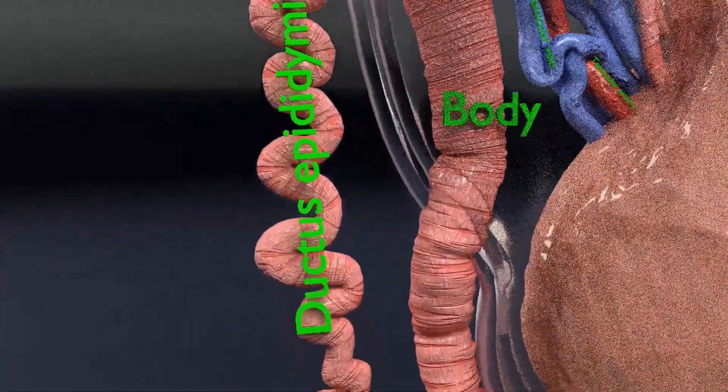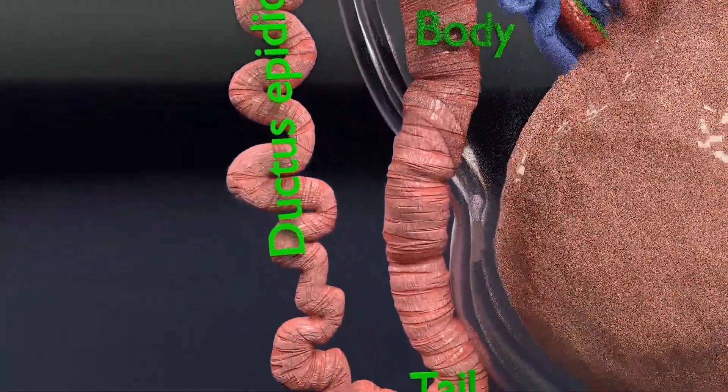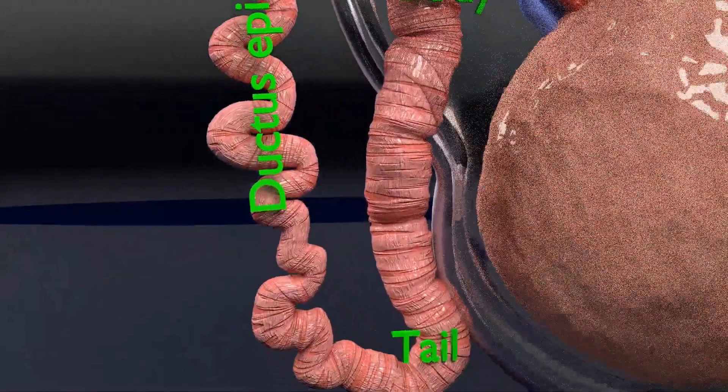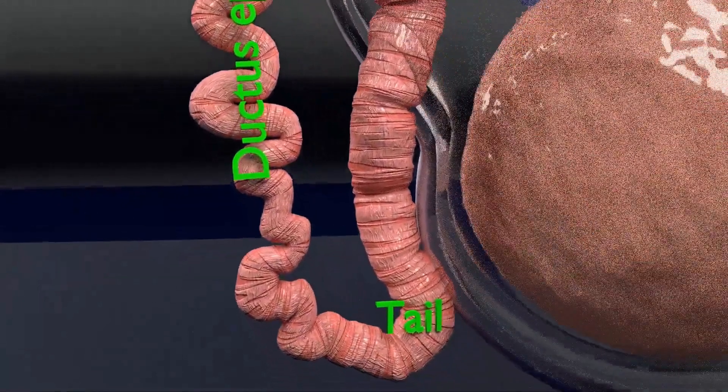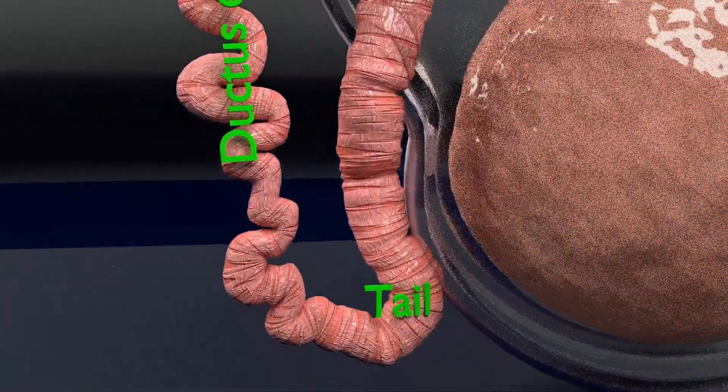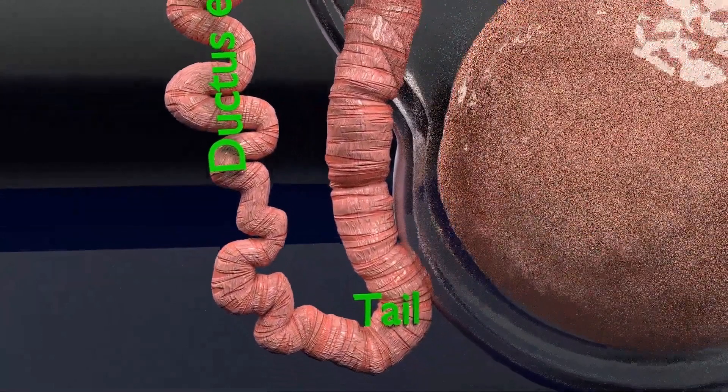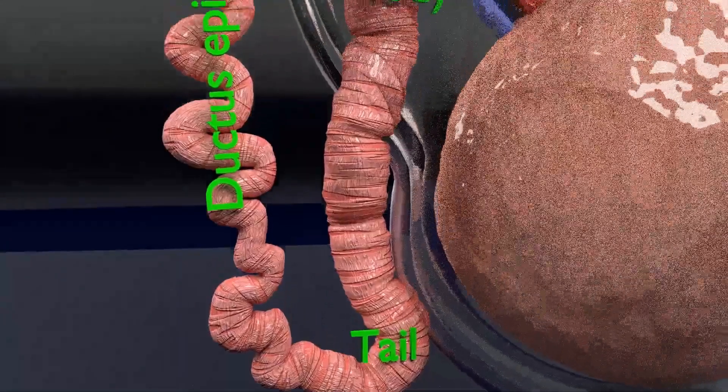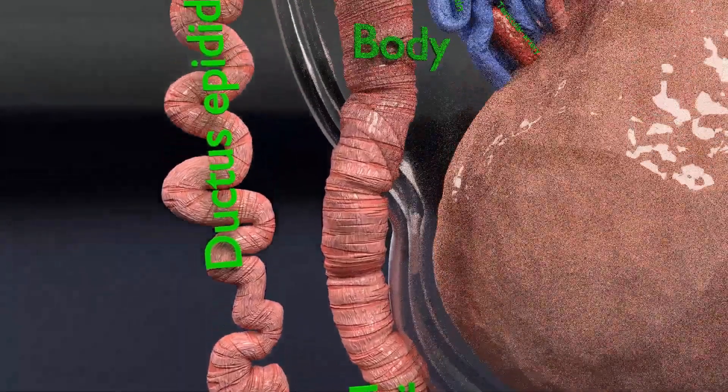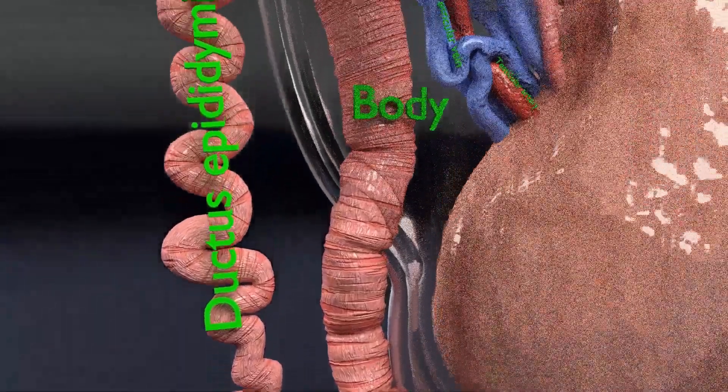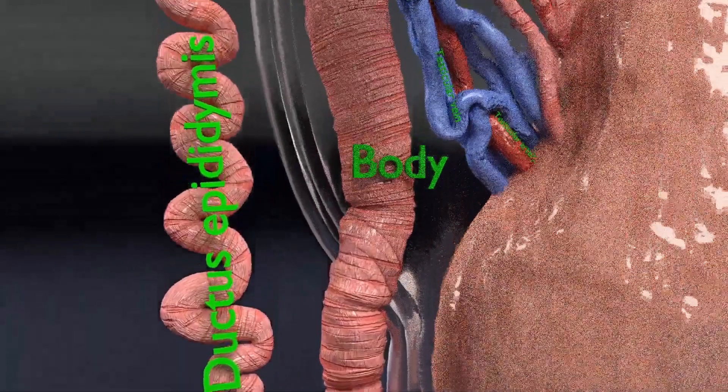Now next is the ductus epididymis. It is a comma-shaped organ and is tightly coiled structure. The total length of the epididymis is 6 meters long. The epididymis is divided into three parts: the head, body, and the tail.